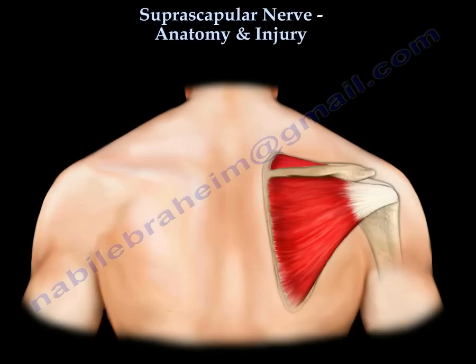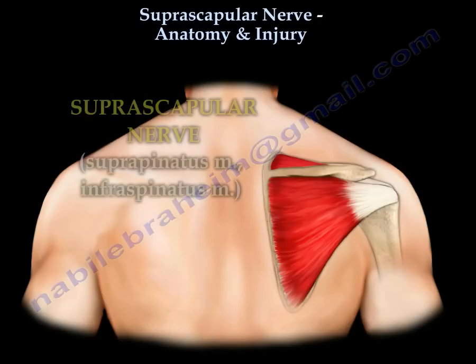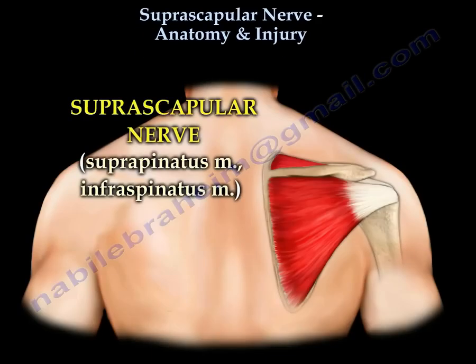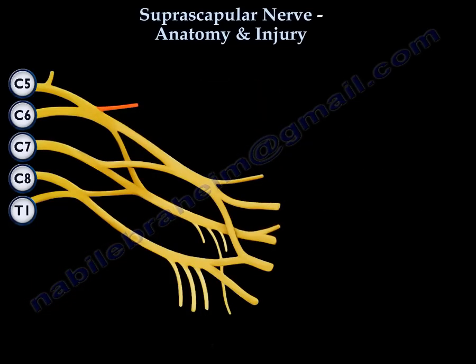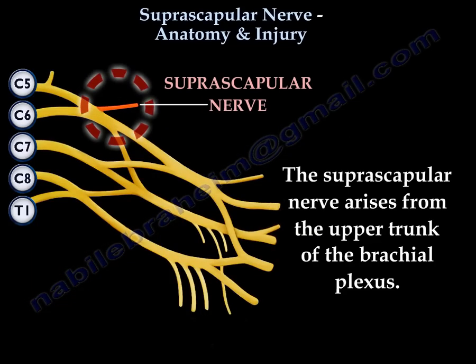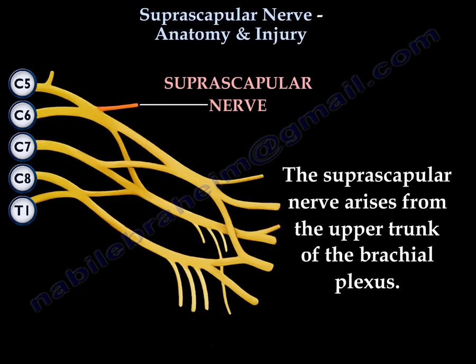The suprascapular nerve supplies the supraspinatus and infraspinatus muscles. It arises from the upper trunk of the brachial plexus.